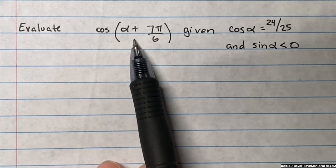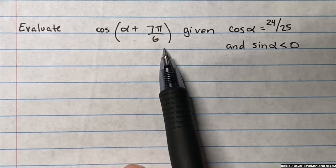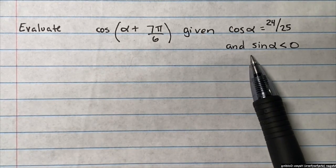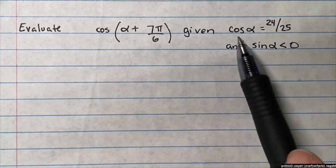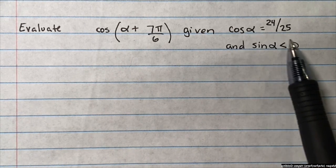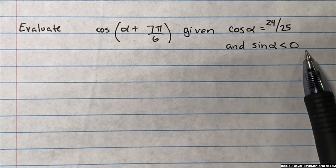Let's evaluate cosine of alpha plus 7 pi over 6, given these two facts about angle alpha. The cosine of alpha is 24 over 25, and the sine of alpha is less than zero.